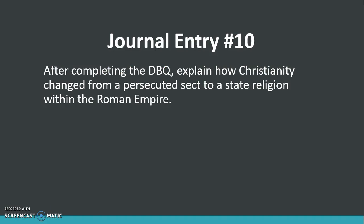That brings us to journal entry number 10. You have a set of documents that you need to examine and answer questions about. Once you have finished answering all of those questions, analyze all of the documents together and explain how Christianity changed from a persecuted sect to a state religion within the Roman Empire. In other words, why and how did Christianity start as a religion where its followers were persecuted and killed and not allowed to practice freely, and later become the official religion of the Roman Empire?